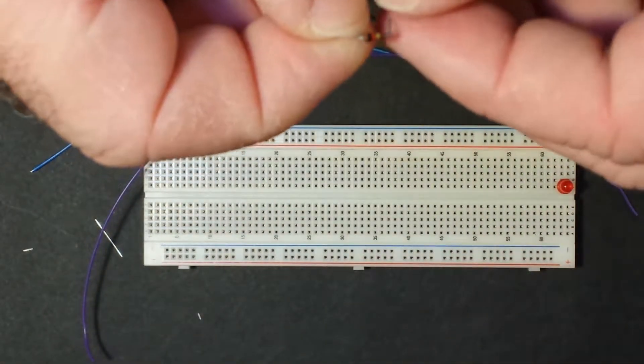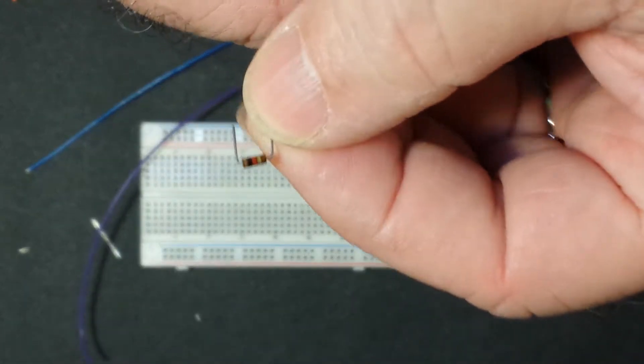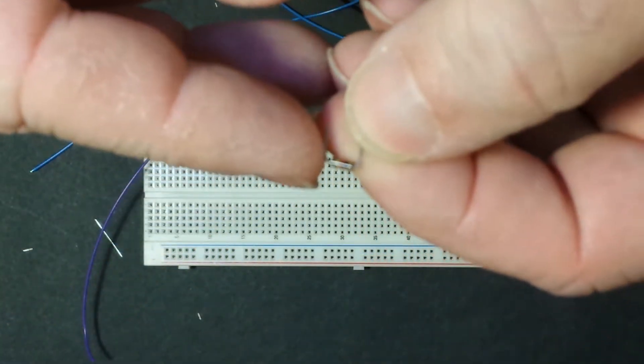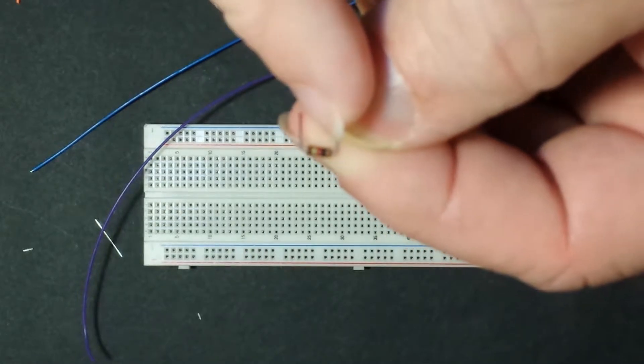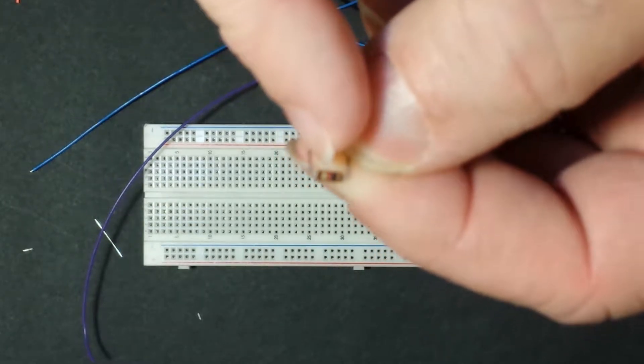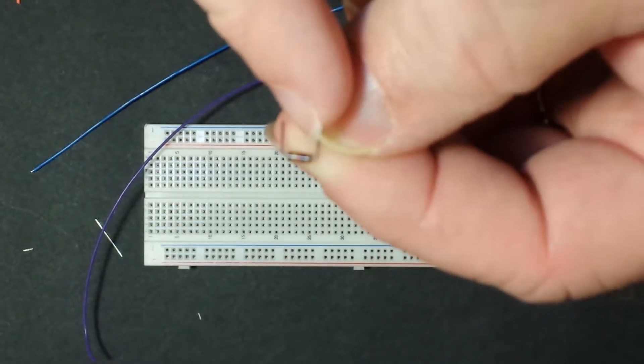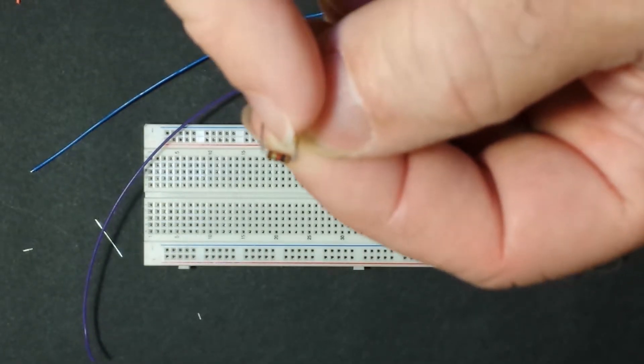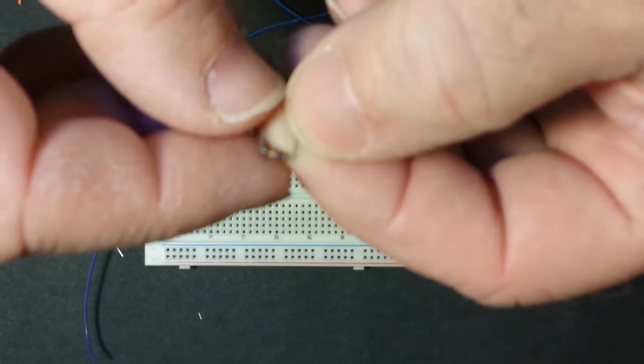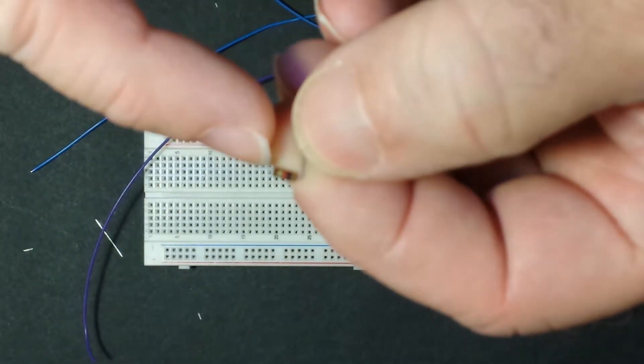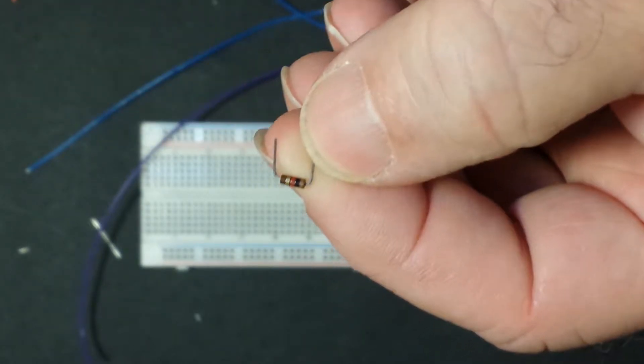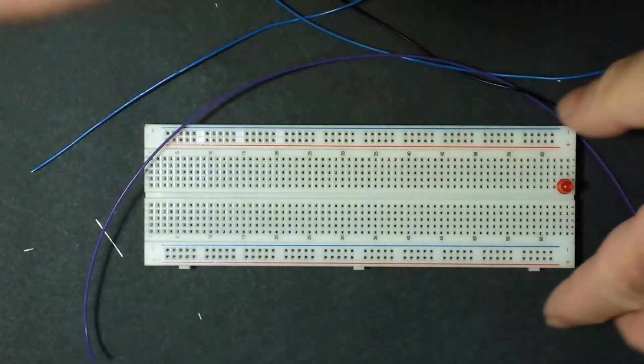This here is a resistor, and we're starting from, I'll start this way, left, just like we read numbers. So brown, black, red, and gold. Brown is one, black is zero, and red means add two more zeros to the end of it. Gold is five percent, so that means that the device can be off by five percent. What's five percent of a thousand? Fifty. So this could be nine hundred and fifty or one thousand fifty. And I'm gonna plug this in here.